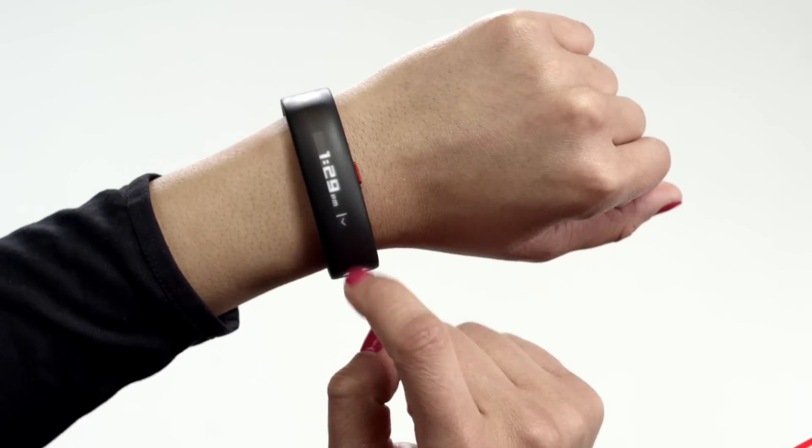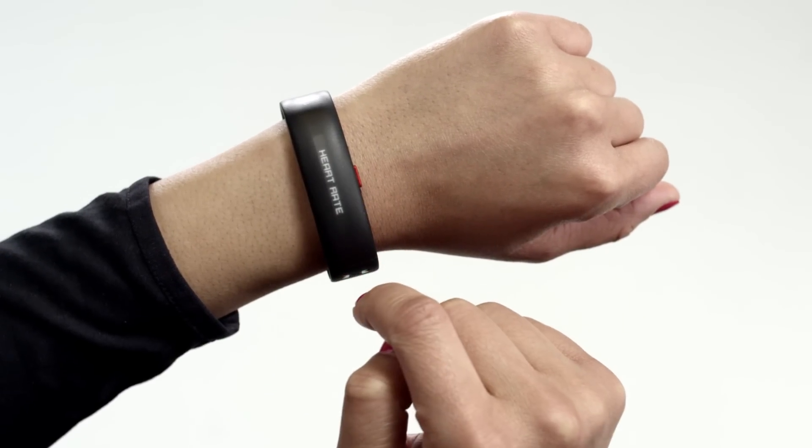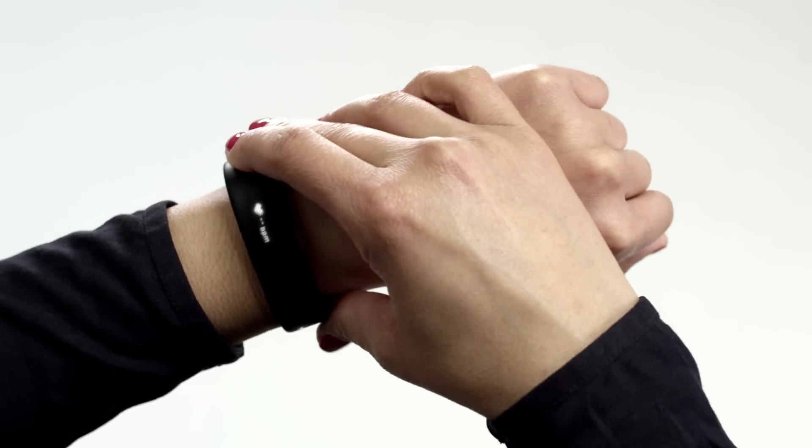To get the most accurate resting heart rate reading from your UA Band, wear it approximately one finger width up from your wrist.